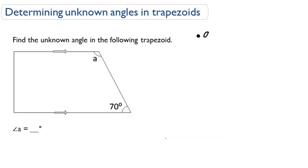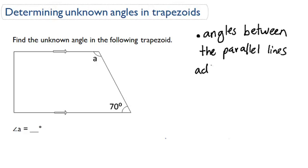For trapezoids, angles between the parallel lines add up to 180, add up to 180 degrees. That's a rule.